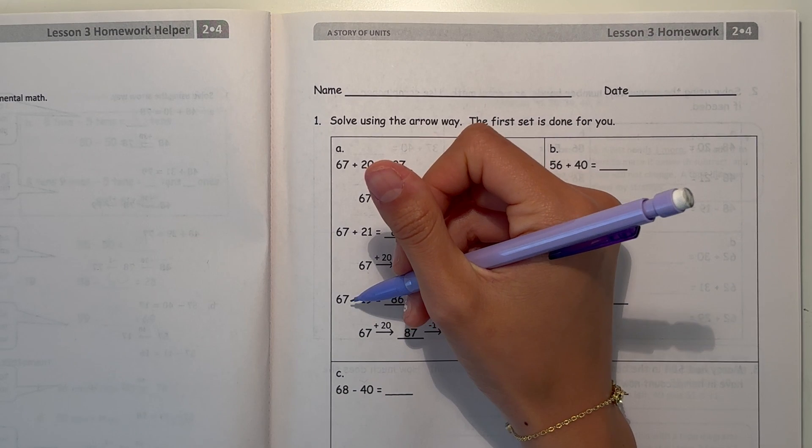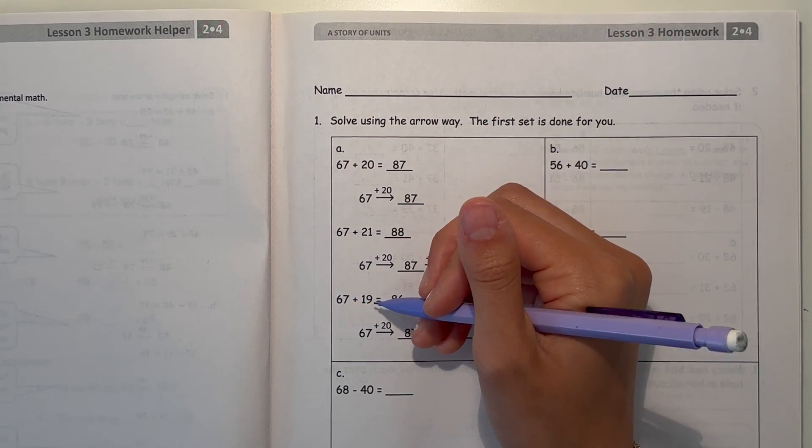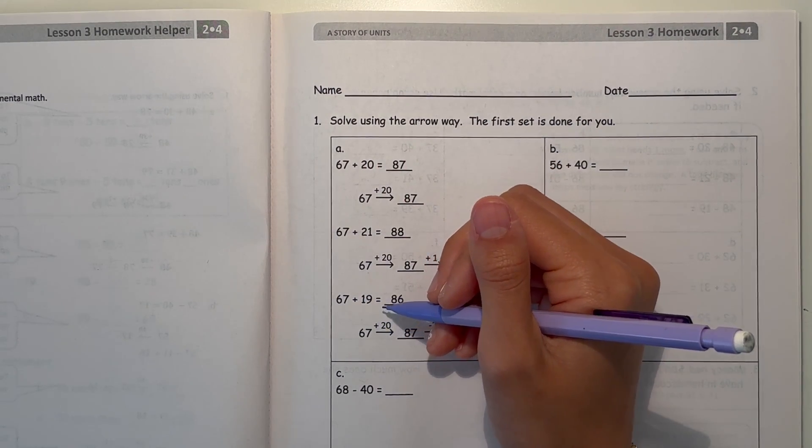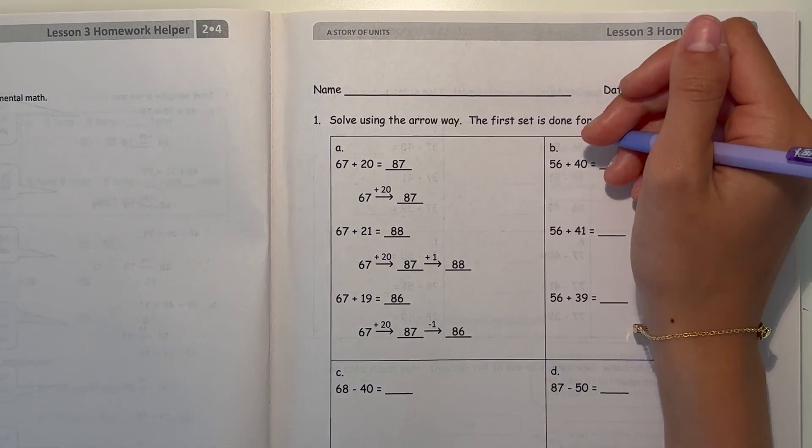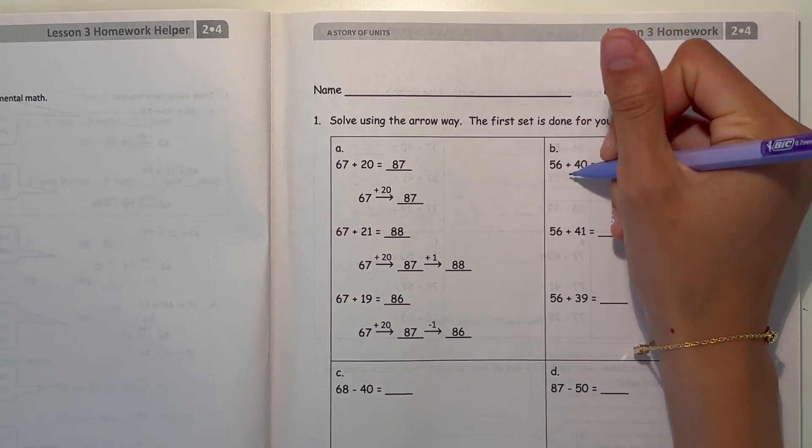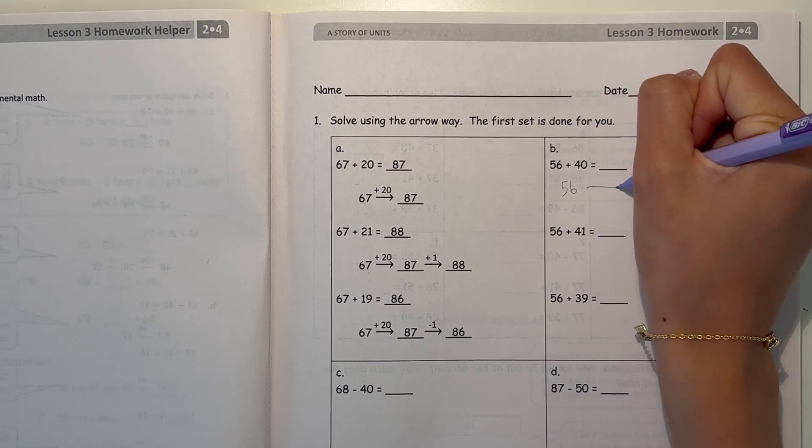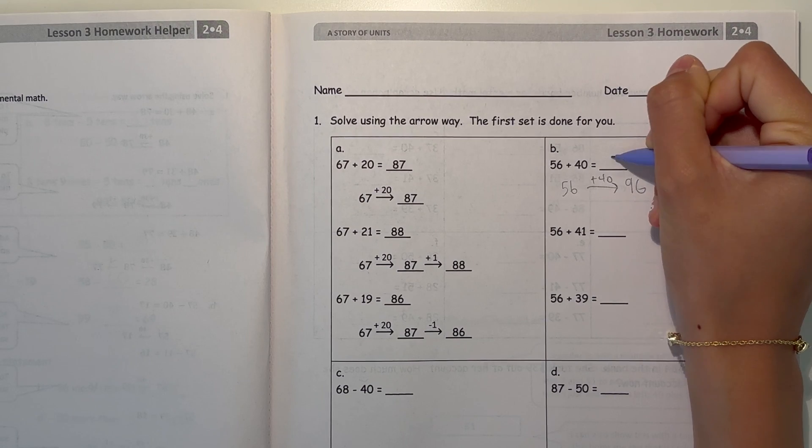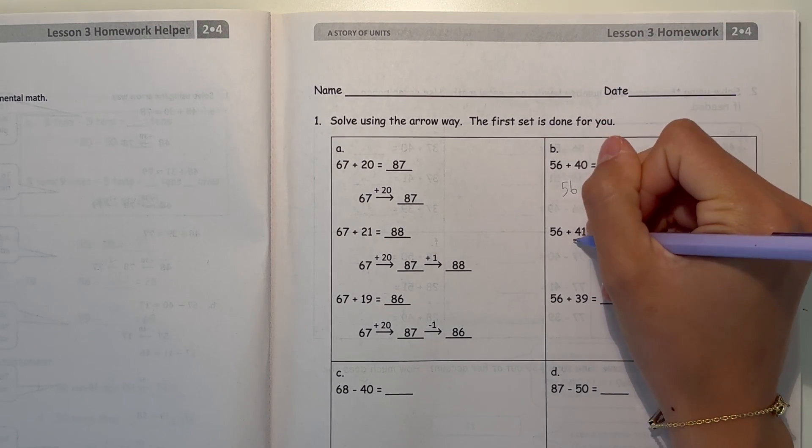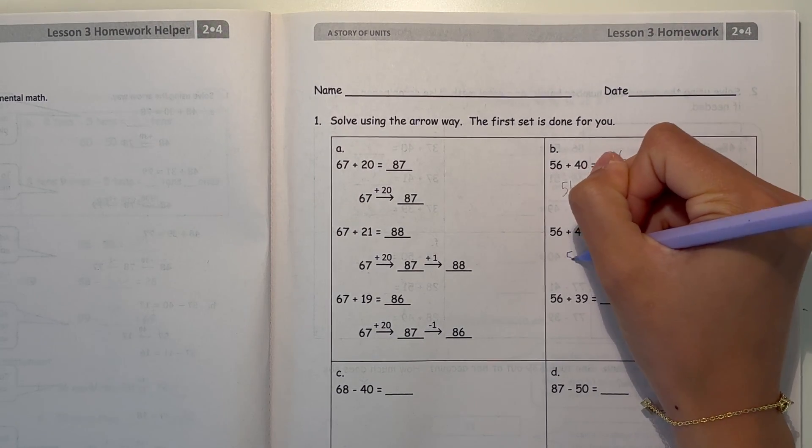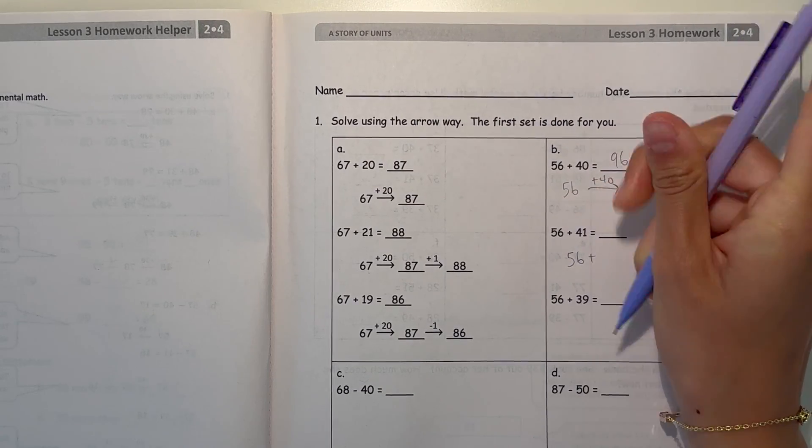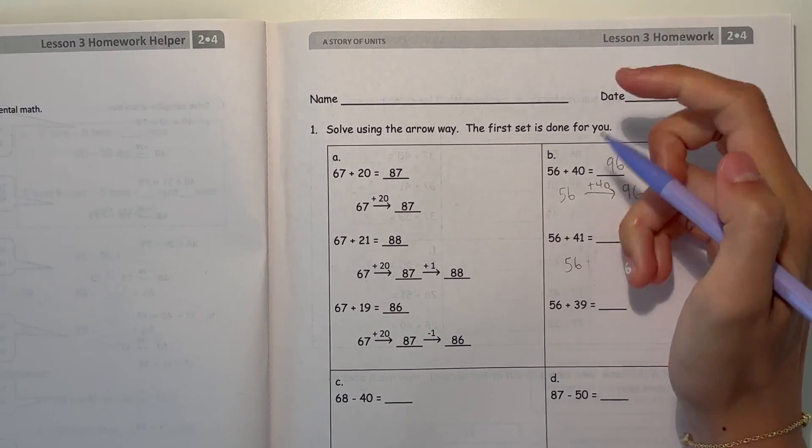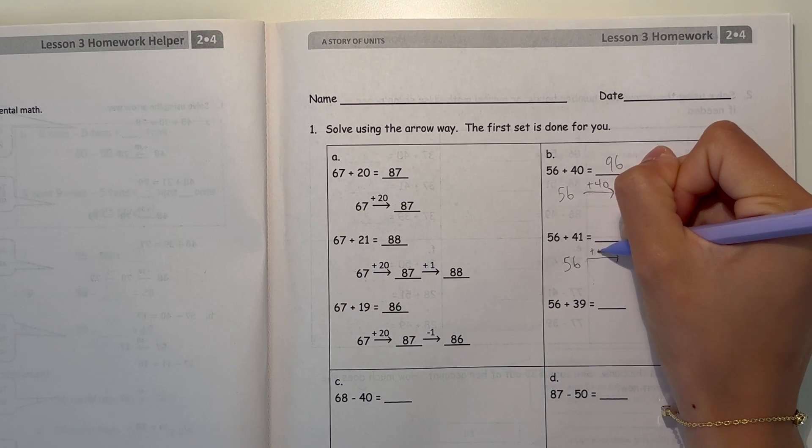And 67 plus 19, they added 20 first and then they subtracted 1. So let's see, let's try B. 56 plus 40. I'm just going to add 40, which is 96.